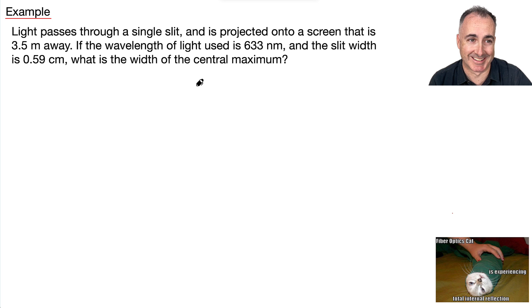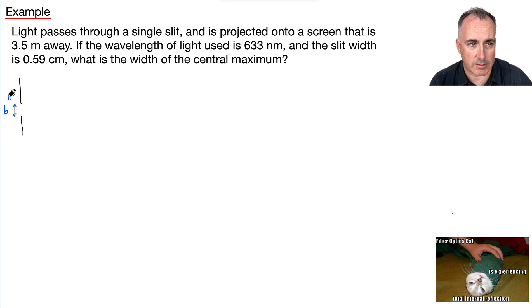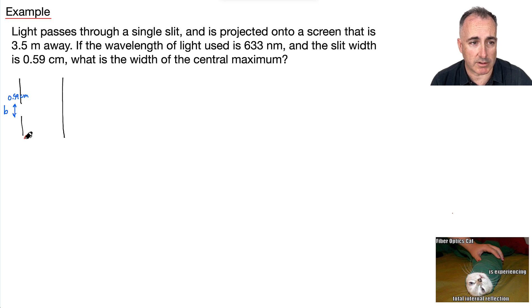So we've got light passing through a single slit. My single slit has a slit width of 0.59 centimeters — that's B. That light is being projected onto a screen. We're told this distance is 3.5 meters — that's going to be what I call R.